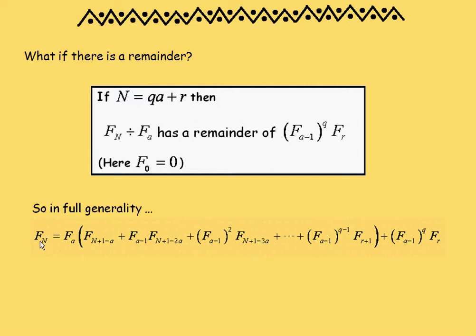So here's the general formula: the nth Fibonacci number is the ath Fibonacci number times something, there's the quotient, plus possibly a remainder. It's convenient to set F_0 to be zero, so if n is a multiple of a with plus zero, then this term vanishes, and I've got the result that F_a is indeed a factor of F_n.